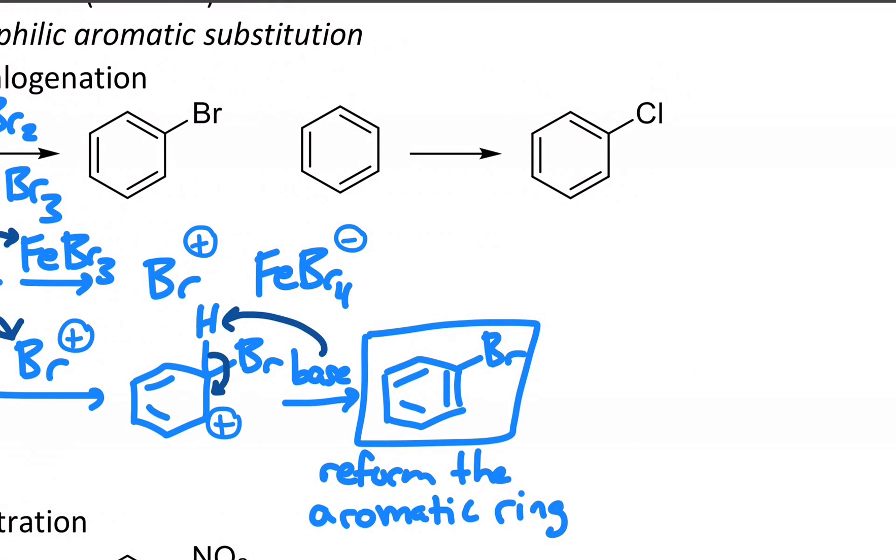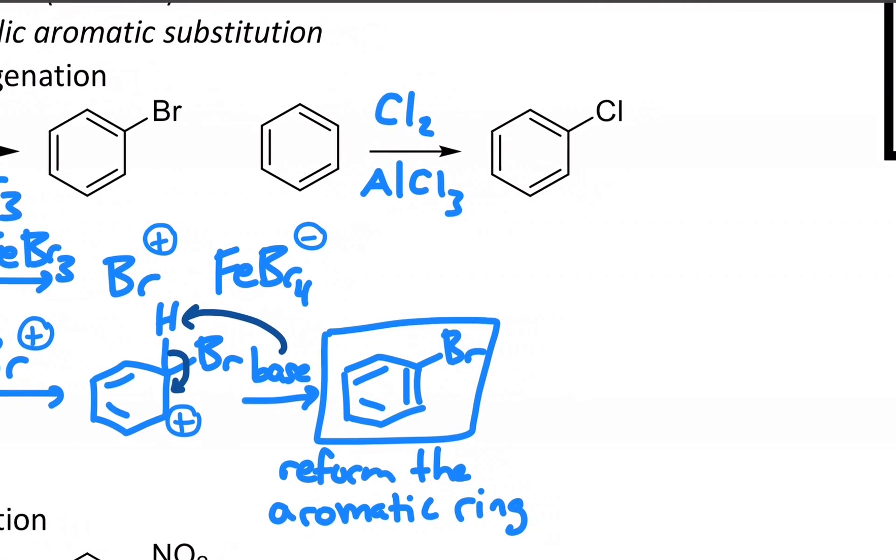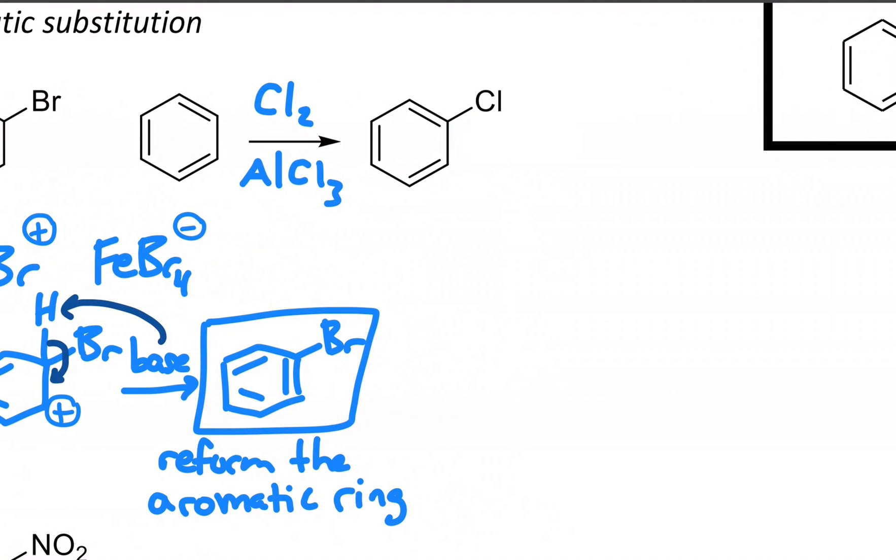Other than bromination, we could attach other halogens. It's almost the same set of reagents for chlorination. It would be elemental chlorine and then a chlorine containing Lewis acid, something like aluminum chloride is what we commonly see. The mechanism is virtually the same.